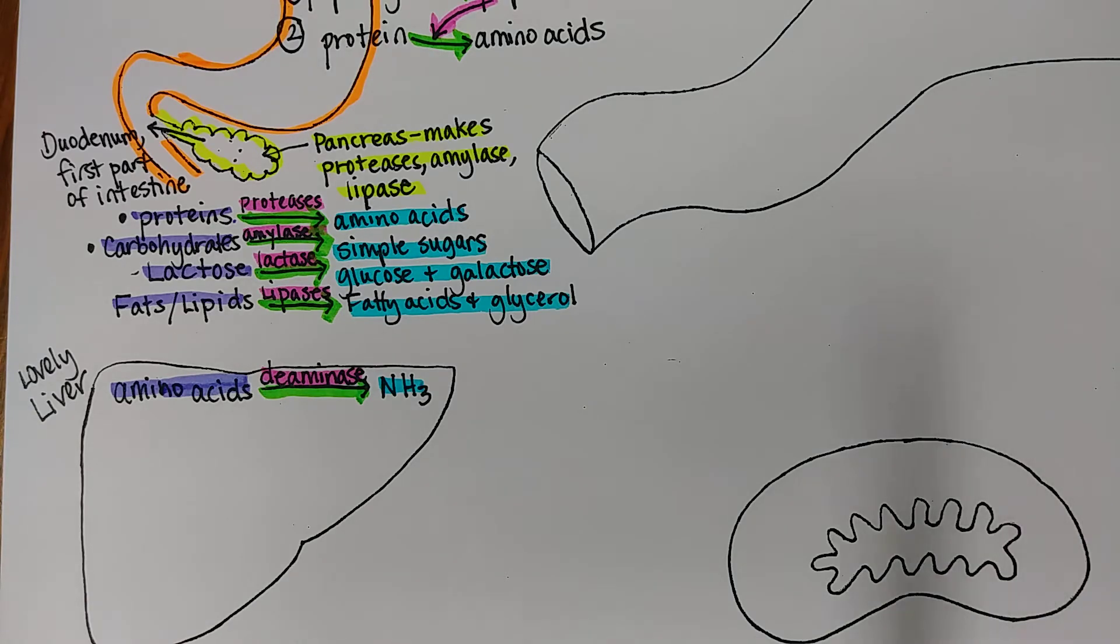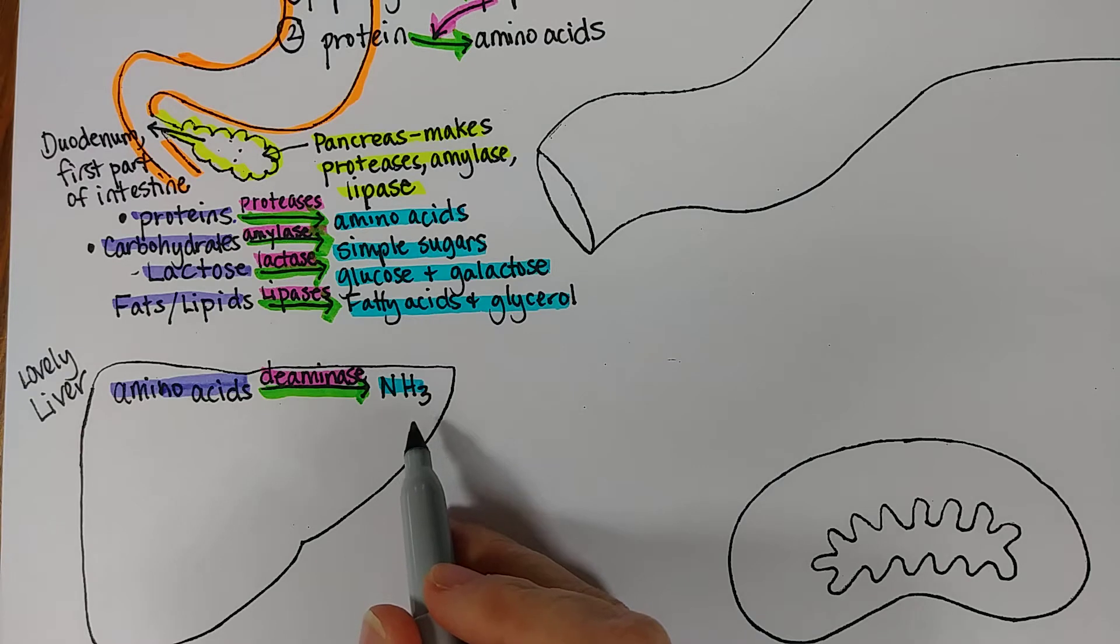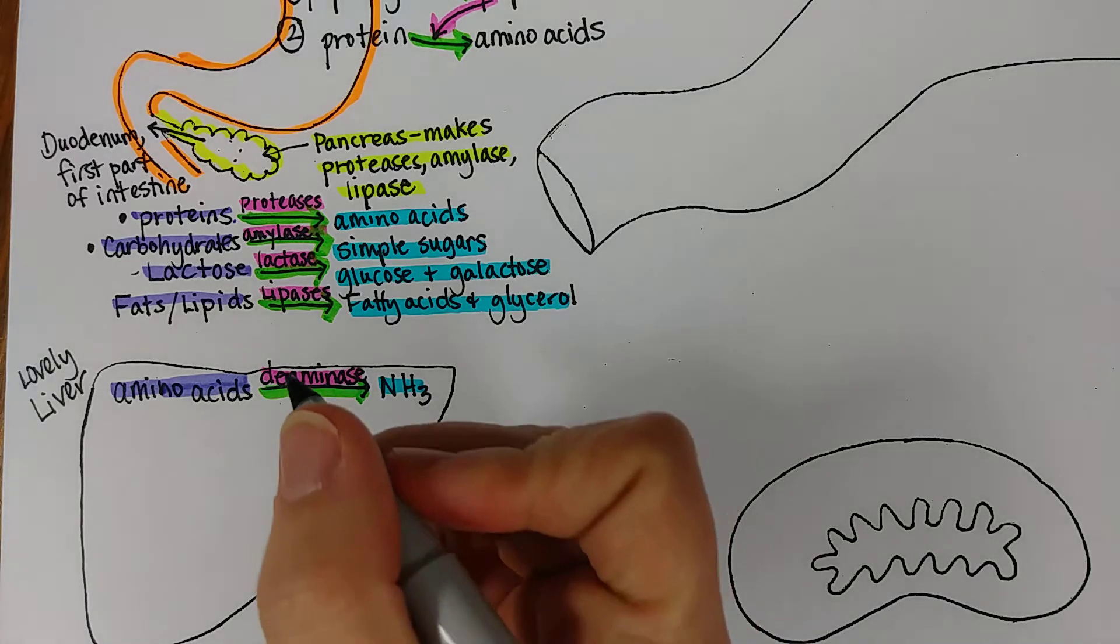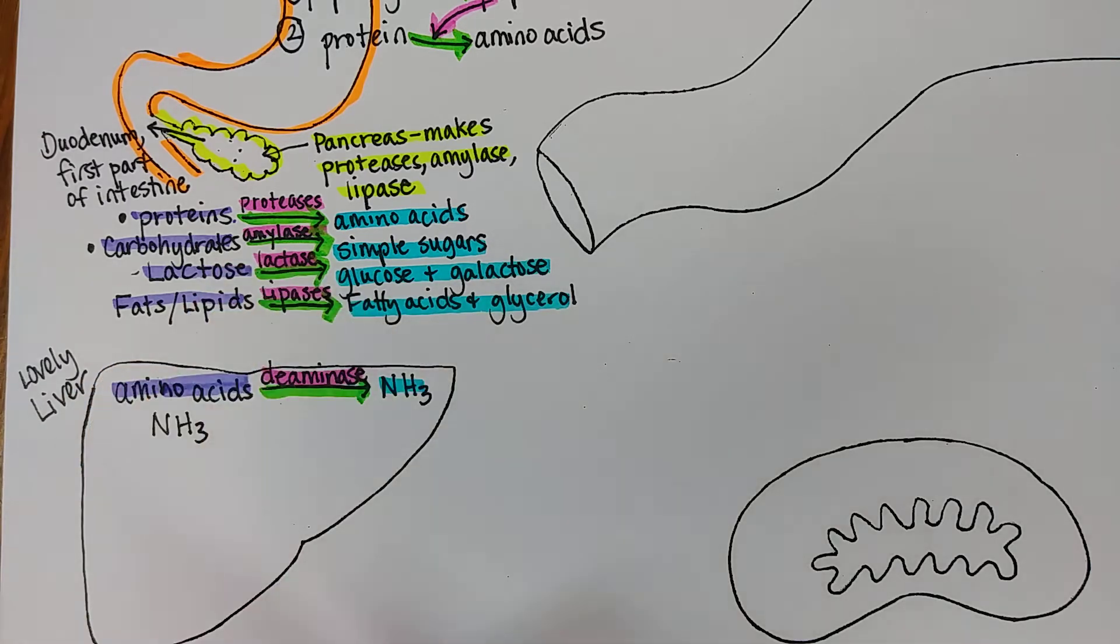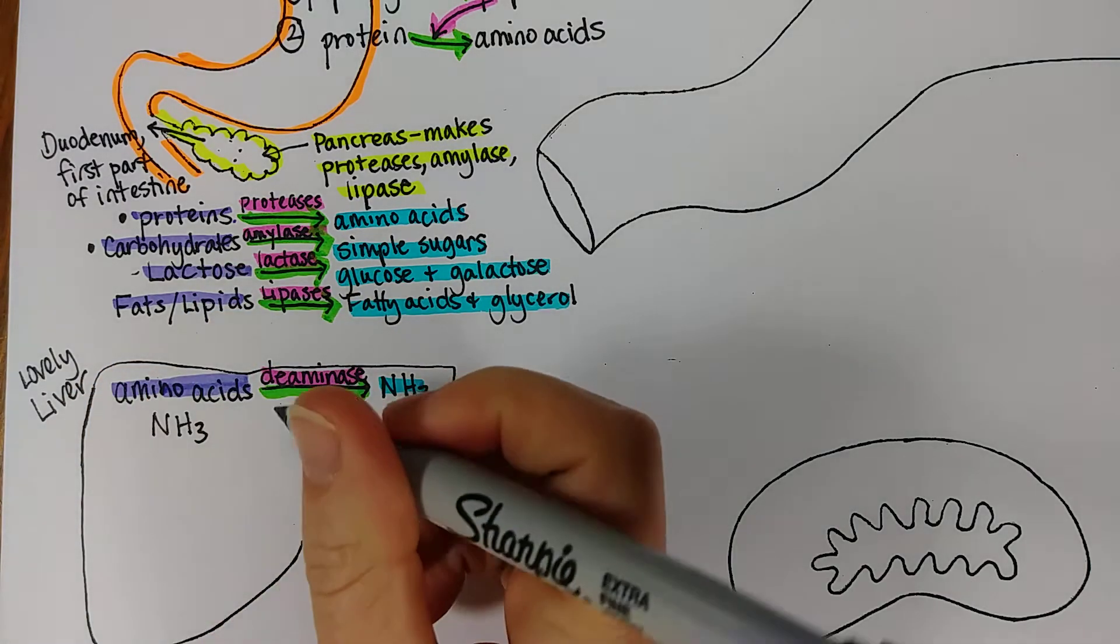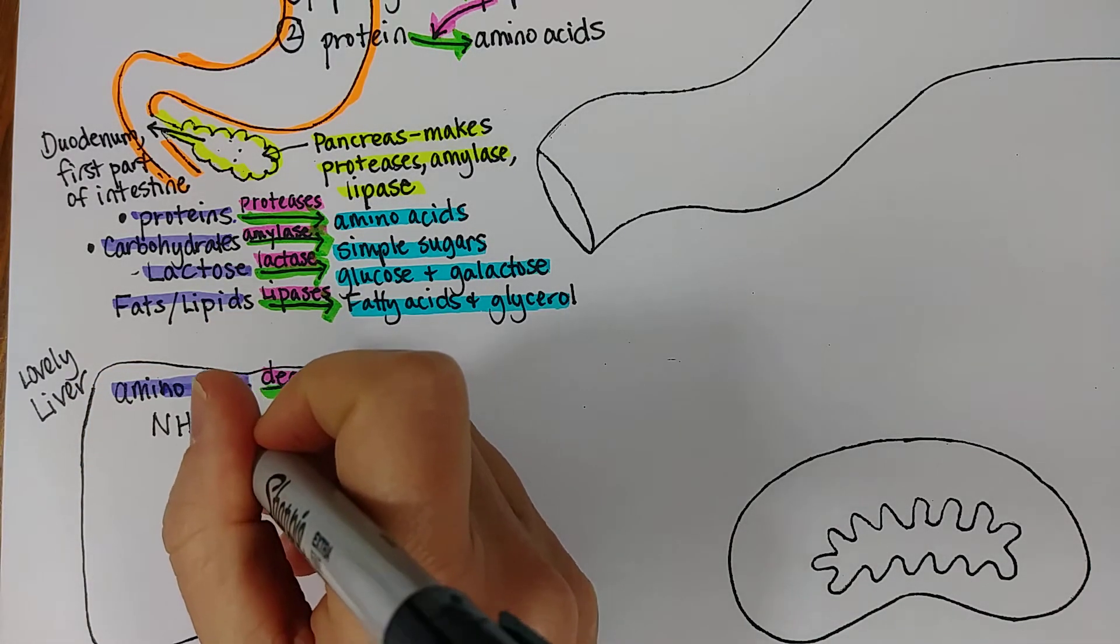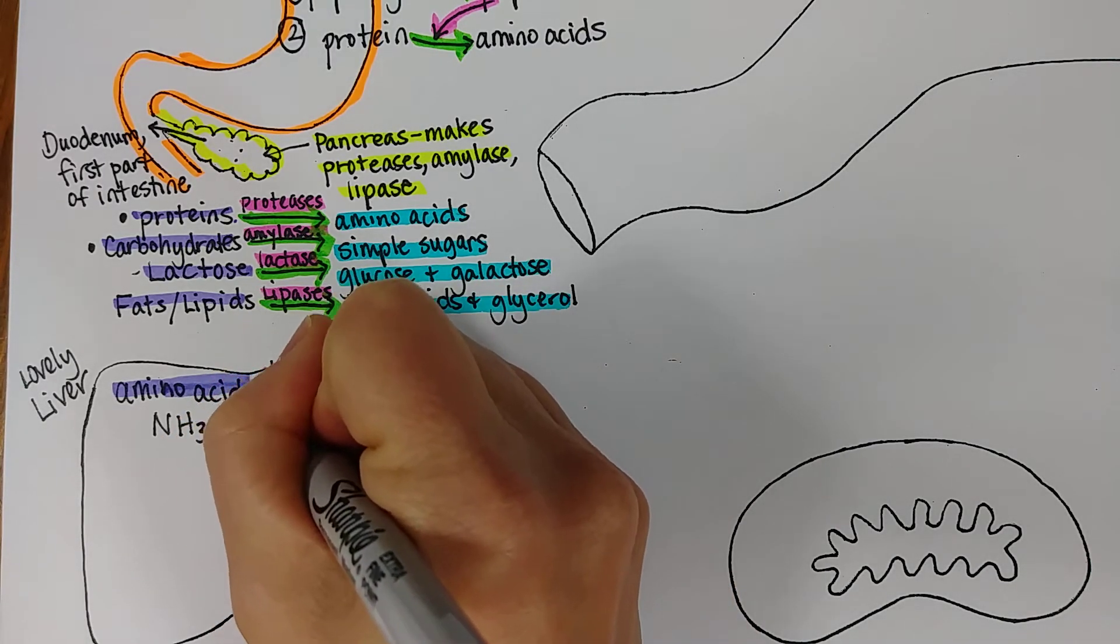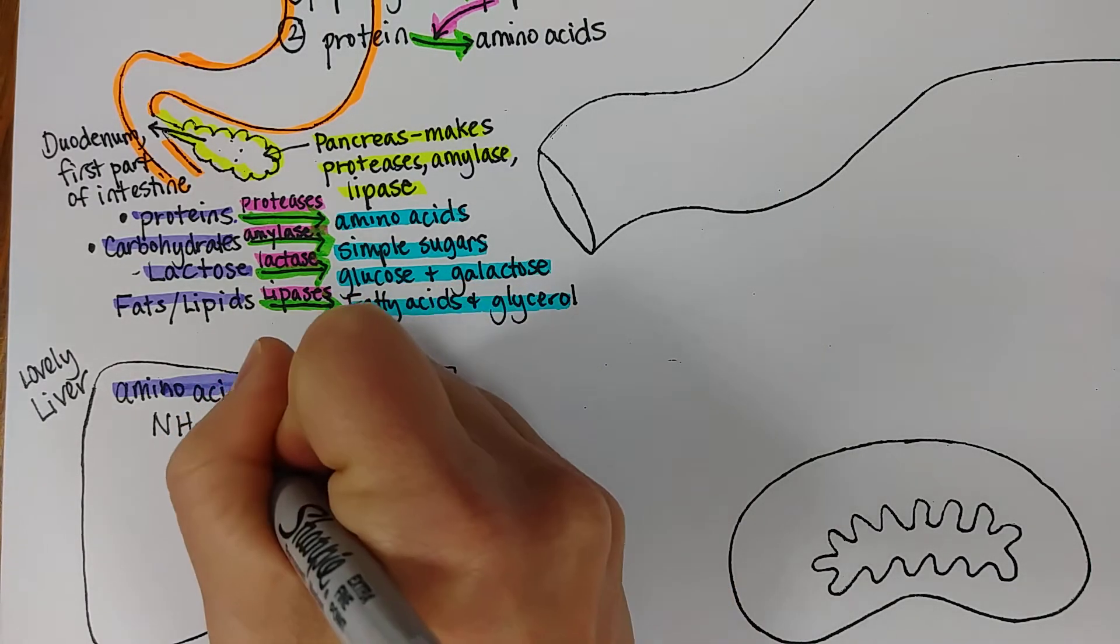Okay so now the liver's got this ammonia to deal with and ammonia cannot build up in the blood or it actually starts to make people's brain not work right and they become all erratic. Anyway it's a toxin in your blood so now the liver's got to deal with this nitrogen and so what it does with the ammonia is through a complex series of reactions that I will just call the urea cycle enzymes.